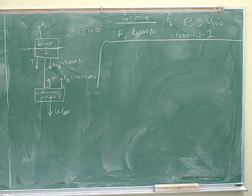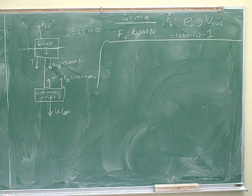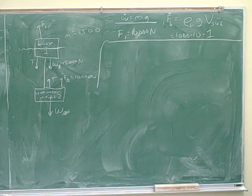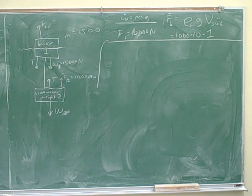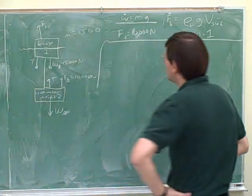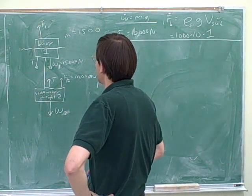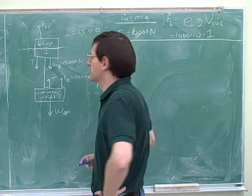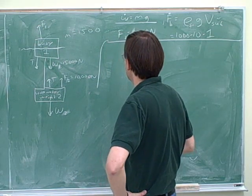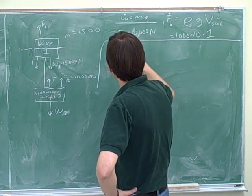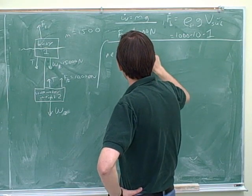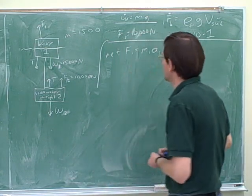Okay, now we're definitely getting to the key problem here. It turns out that I think we are going to be able to figure out this buoyant force for this part. So you're basically using the net force on object one equals the mass of object one times the acceleration of object one. We're only going to focus on the y-components.